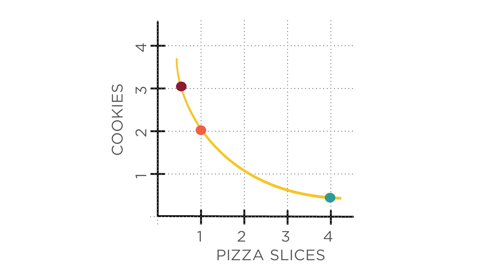What about that option of two slices and two cookies? You prefer that option to any of the others, so that bundle will lie on a higher indifference curve. And you prefer any bundle on this new higher indifference curve to any bundle on the lower indifference curve.